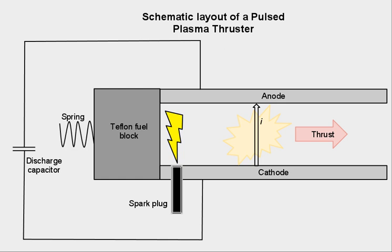The heat generated by this arc causes the resultant gas to turn into plasma, thereby creating a charged gas cloud. Due to the force of the ablation, the plasma is propelled at low speed between two charged plates, an anode and cathode. Since the plasma is charged, the fuel effectively completes the circuit between the two plates, allowing a current to flow through the plasma. This flow of electrons generates a strong electromagnetic field which then exerts a Lorentz force on the plasma, accelerating the plasma out of the PPT exhaust at high velocity.